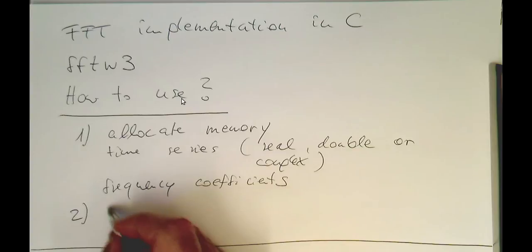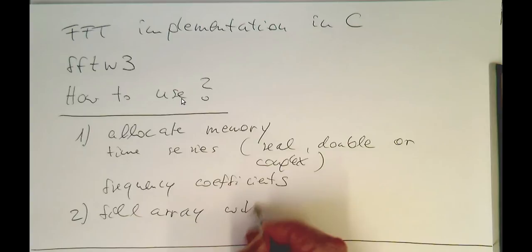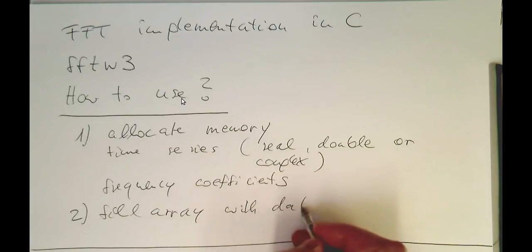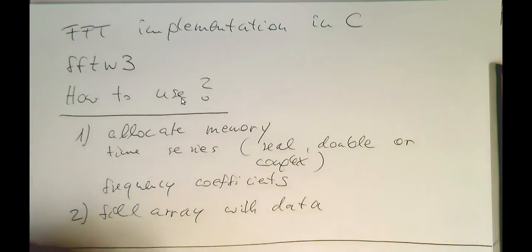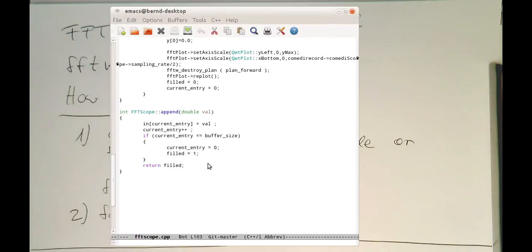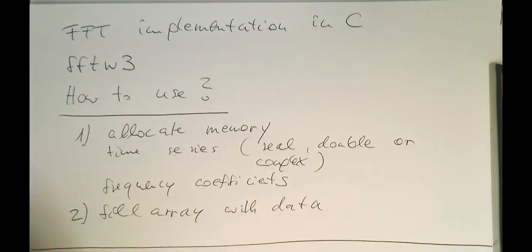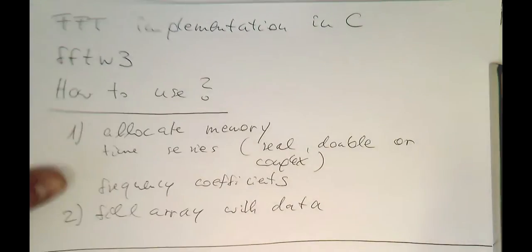Then obviously the second step is fill array with data. In my case, I do it on a sample by sample basis because I do like semi-real-time processing. Let's have a quick look how I've done that. This is at the very bottom here. There's a function called append. I just store the value in this in array here. Then I just increment the pointer. And at some point it's full. So that was easy. So we fill the array with data.